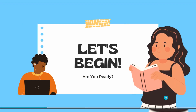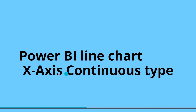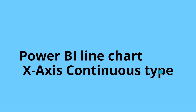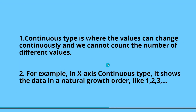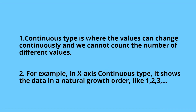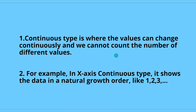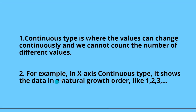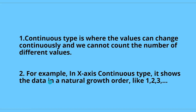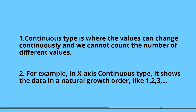Let's begin. First we will see about the Power BI line chart x-axis continuous type. In the continuous type, values are displayed continuously and we cannot change the values or count the number of different values that are presented. For example, in the x-axis continuous type, the data shows in a natural growth order like 1, 2, 3, etc.